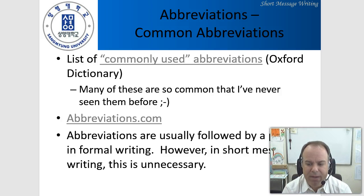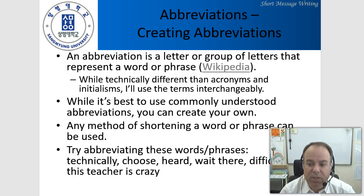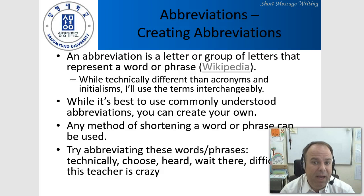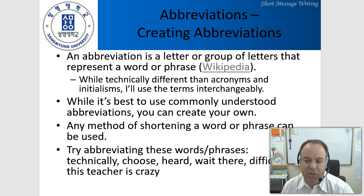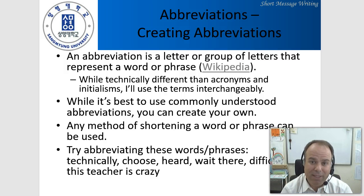Abbreviations are usually followed by periods in formal writing; however, in short message writing this is really unnecessary — I don't think anyone would ever do that. Creating your own abbreviations is very common and handy. An abbreviation is a letter or group of letters that represent a word or a phrase. Technically this is different from acronyms and initialisms. An acronym, like NASA — National Aeronautics and Space Administration — is pronounced like a word. Initialisms, like UN or FBI, are pronounced letter by letter. While it's best to use commonly understood abbreviations, you can certainly create your own — any method of shortening a word or phrase works as long as people understand it.